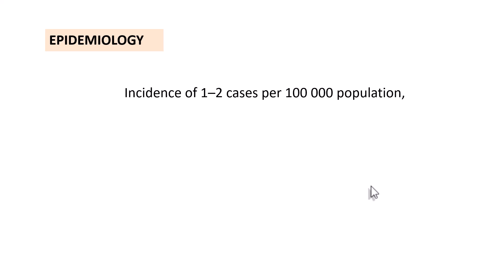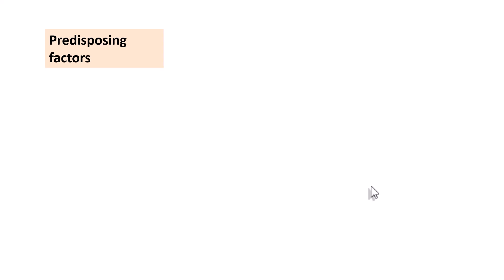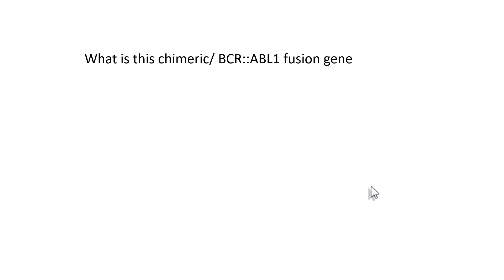Moving on to the epidemiology, the incidence of chronic myeloid leukemia is around 1 to 2 cases per lakh population, with a slightly male preponderance. The peak incidence of CML is in the 5th to 6th decades of life, though it can occur in children and adolescents. The predisposing factors include acute radiation exposure — the most important predisposing factor — and there is very little inherited predisposition towards development of CML.